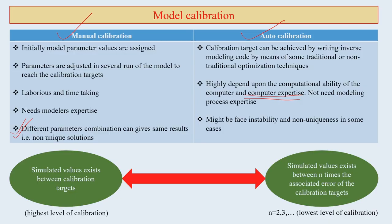Sometimes, an individual may face instability or non-uniqueness in auto calibration, and these issues must be addressed by running the auto calibration multiple times. There are two calibration conditions: simulated values existing within the calibration target range, which is the highest level of calibration, and simulated values existing within n times the associated error of the calibration targets, which is the lowest level.